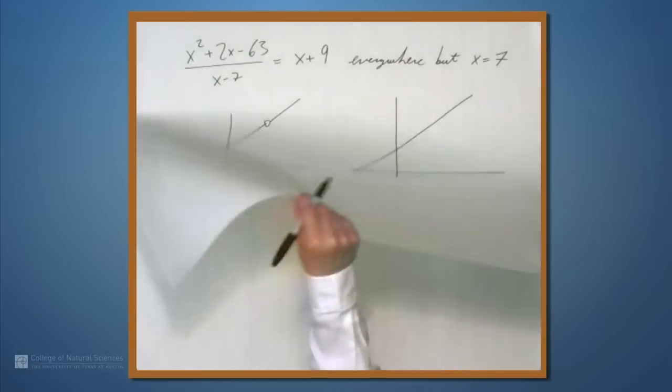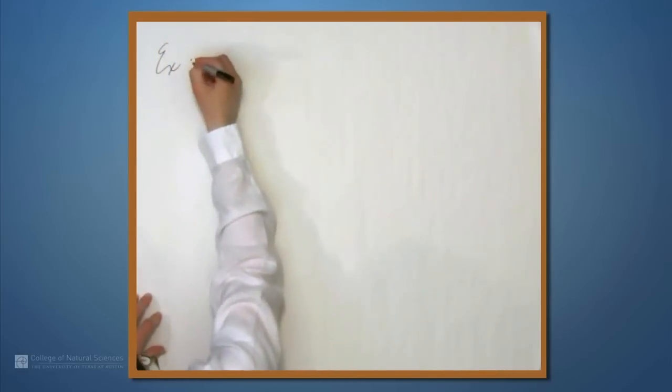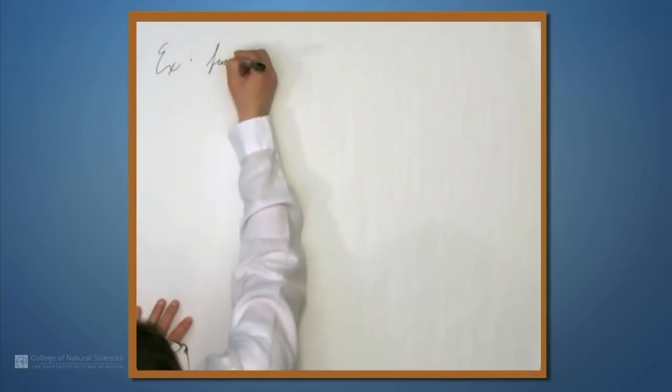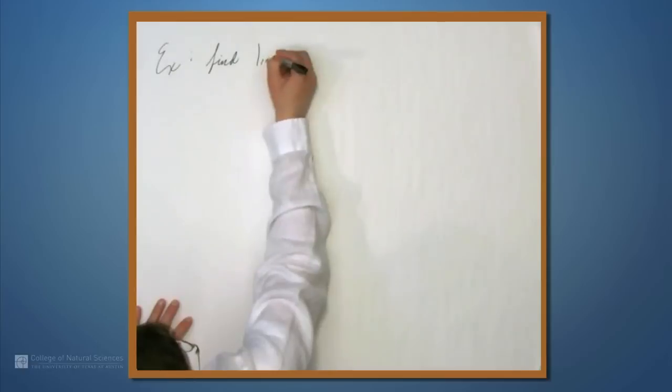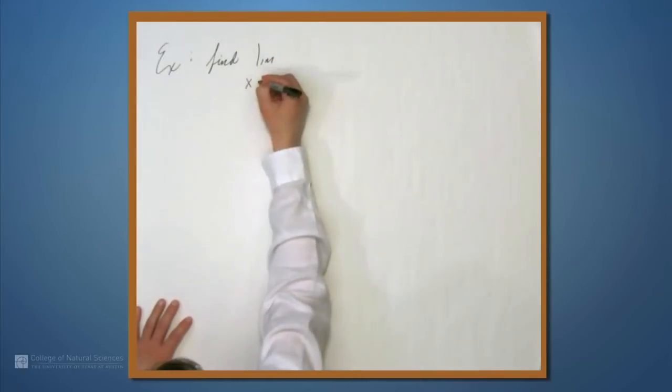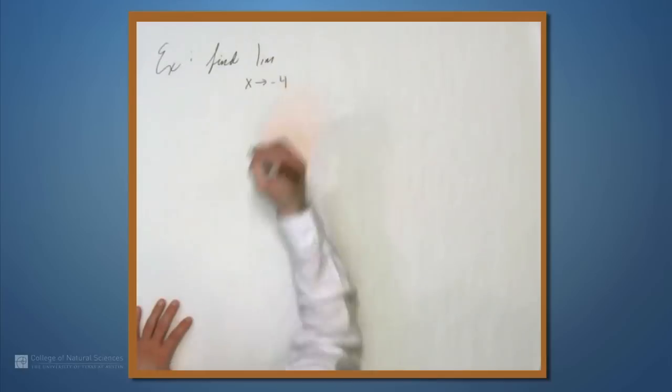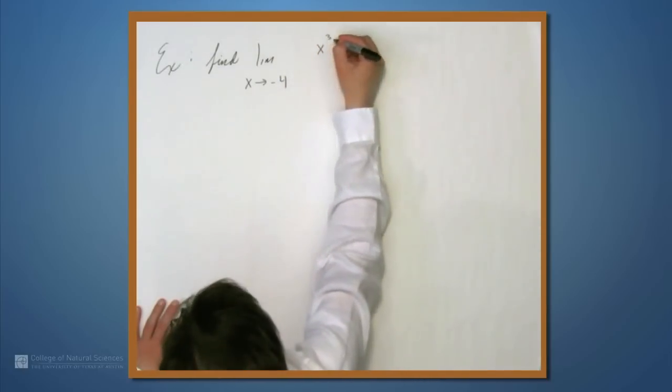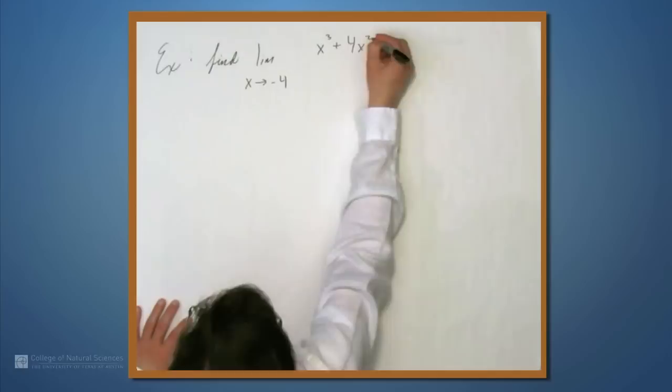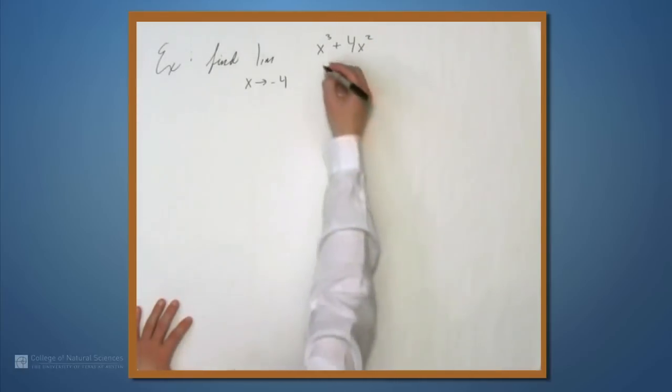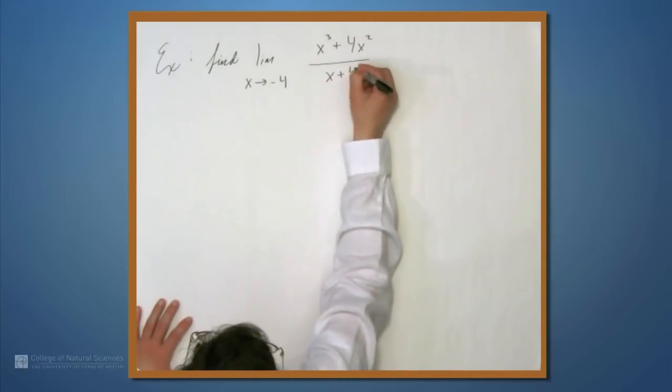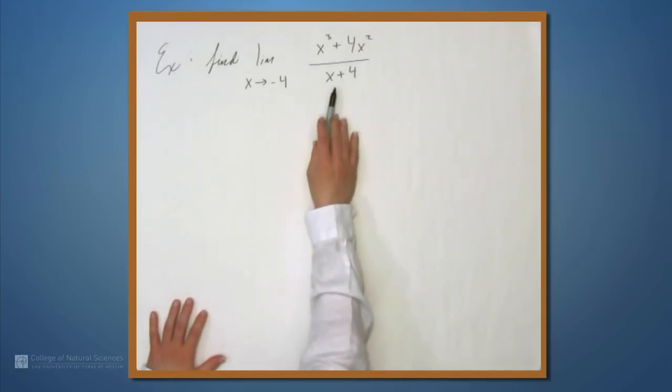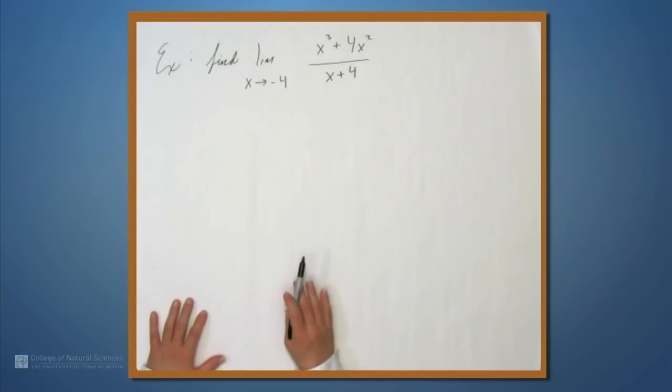Let's do another example. Let's find the limit as x approaches negative 4 of x³ plus 4x² all over x plus 4. So once again, it's immediate that we can't plug in negative 4 to this expression because we have x plus 4 in the denominator. But we're going to do the same thing that we just did. Namely, factor the numerator and then cancel.